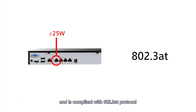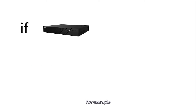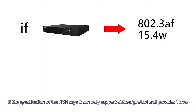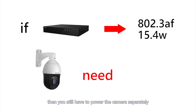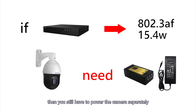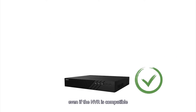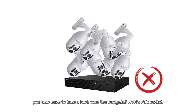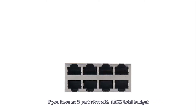A PTZ camera requires that the maximum per-port output of the NVR reaches 25W and is compliant with the 802.3AT protocol. For example, if the NVR specification says it can only support 802.3AF protocol and provides up to 15.4W per port, then you still have to power the camera separately. On the other hand, even if the NVR is compatible, if there are many cameras already plugged in, you also have to check the budget of the NVR's PoE switch.